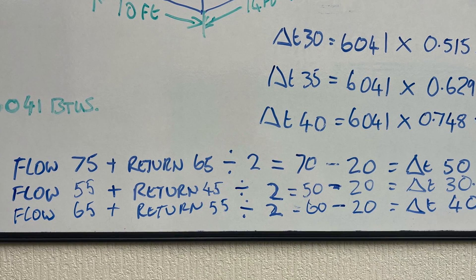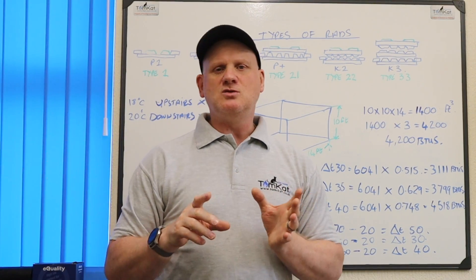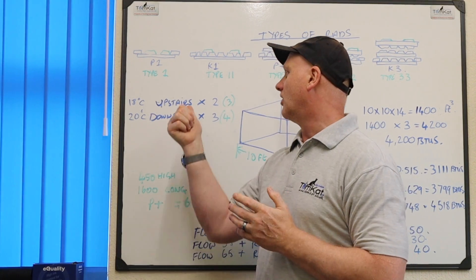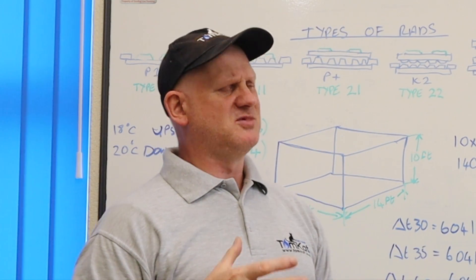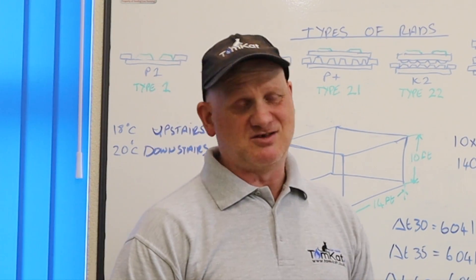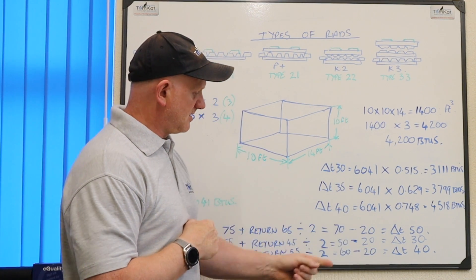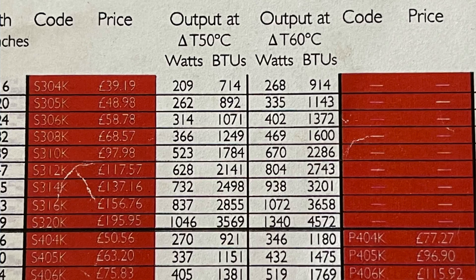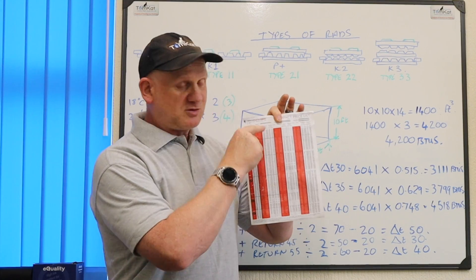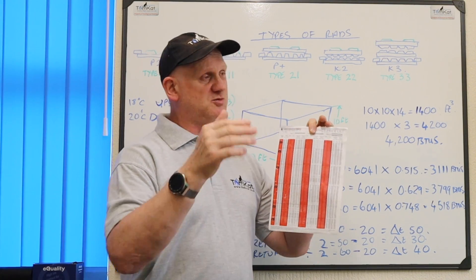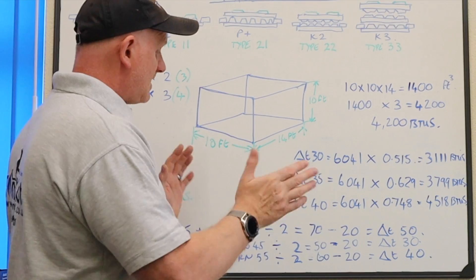Now if you did watch the first video where I was talking about the flow temperatures coming into the radiators, I talked about mean water temperature and I talked about delta T. So this is how we work out our mean water temperature. So if our flow temperature is 75 and our return temperature is 65, because the radiators we have a 10 degree difference across them. If we divide that by two, it gives us a mean water temperature of 70.